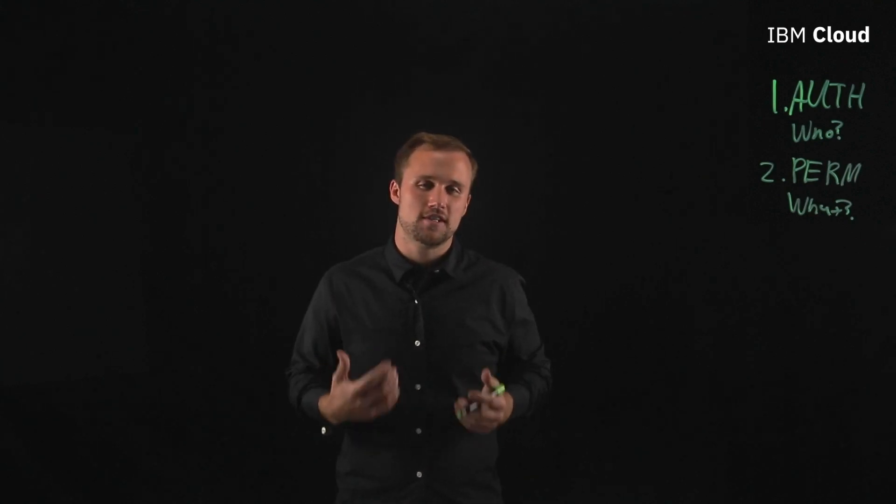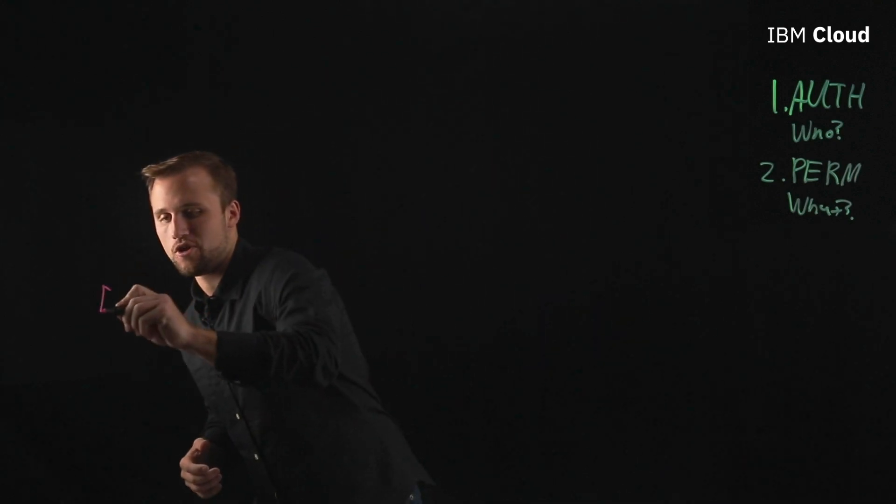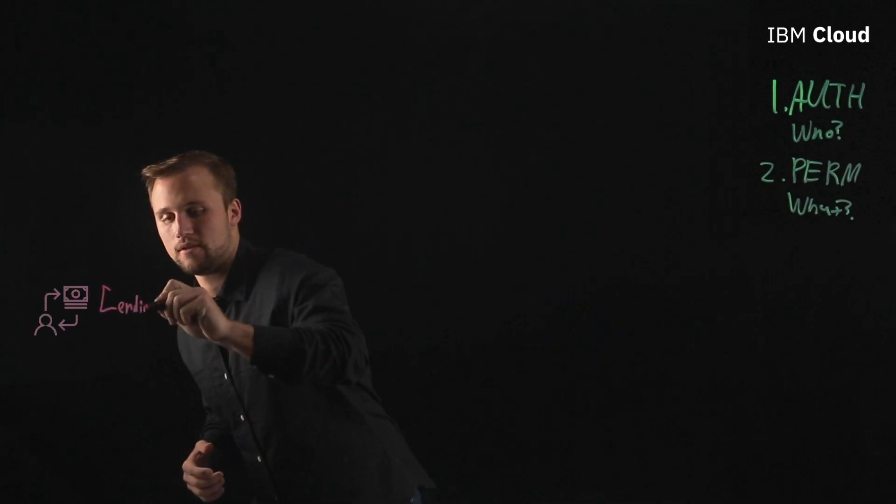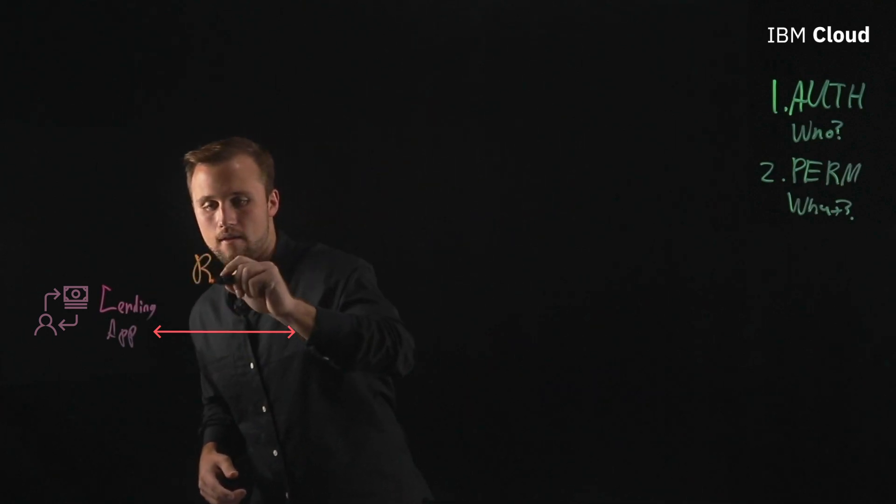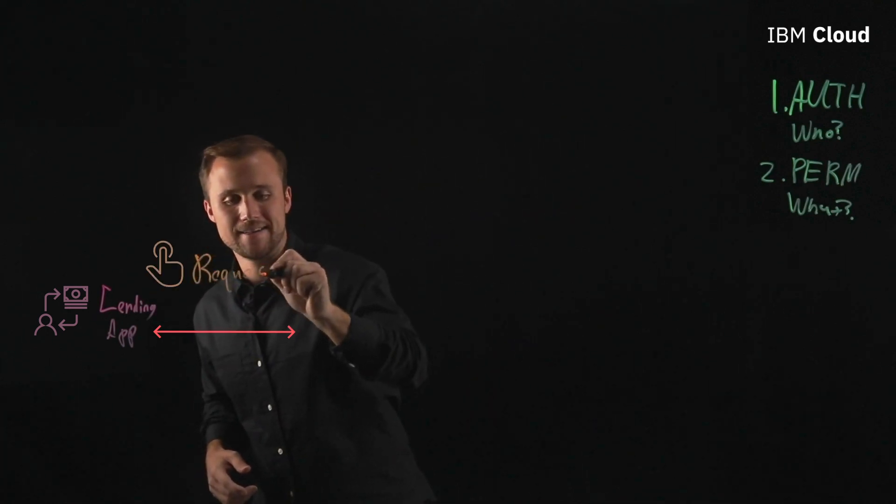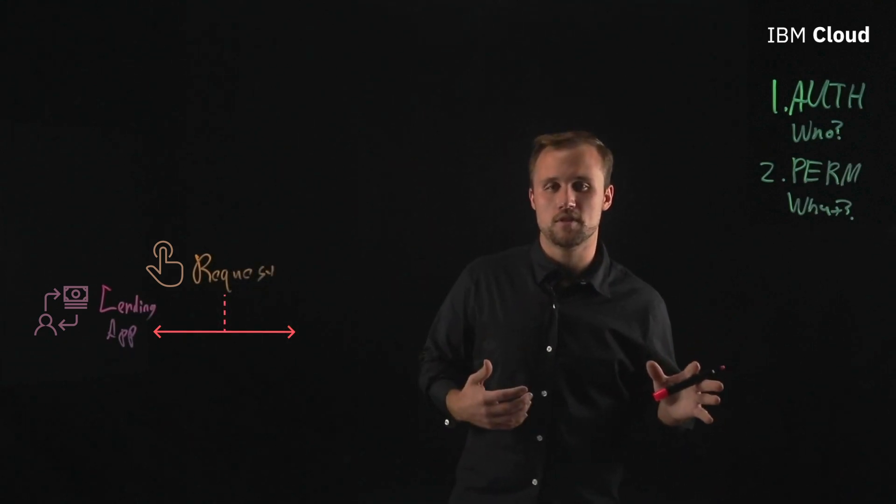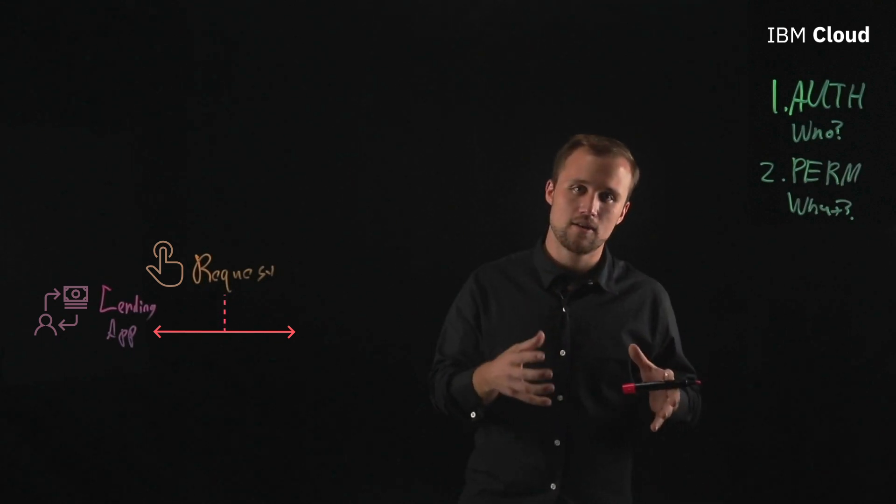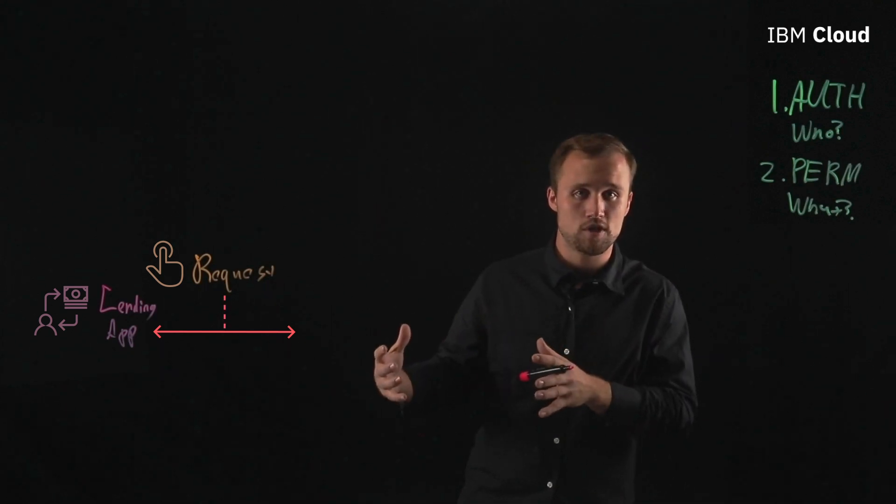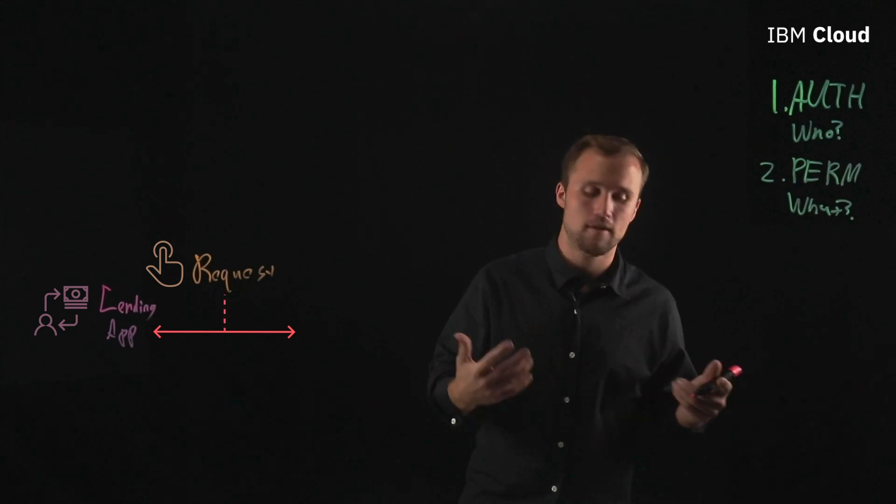Now let's look at our service to service example. So what we have to start with is that we have let's just call it a lending application. So lending app and this lending app is going to want to request permissions to be able to access, again we were talking about a database earlier, let's be a little bit more specific. This database that it needs to access and a given table within this database has necessary information to give to its model in order to be able to make a judgment on whether or not they want to provide a consumer a loan.